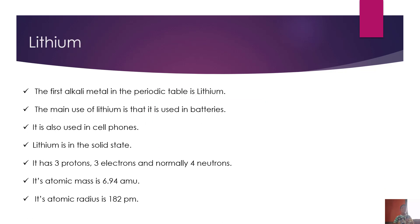The first alkali metal in the periodic table is lithium. The main use of lithium is that it is used in batteries. It is also used in cell phones. Lithium is in the solid state. It has 3 protons, 3 electrons and normally 4 neutrons.